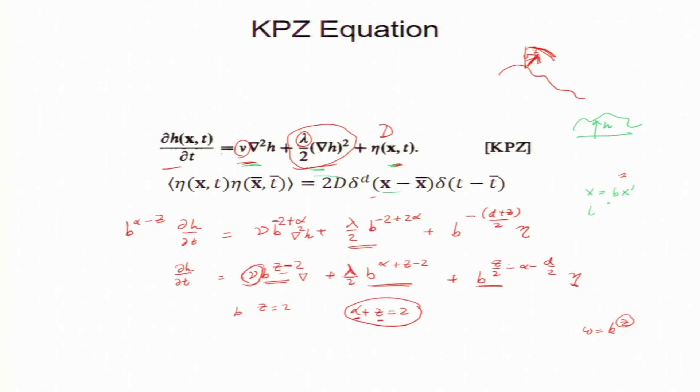And so, then h equal to h prime times b to the power z. So, this is done there and t is here, t is t prime times b to the power z.